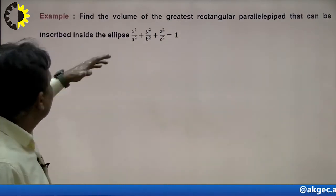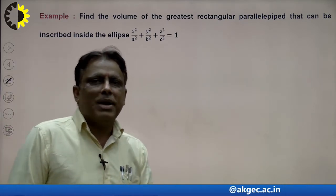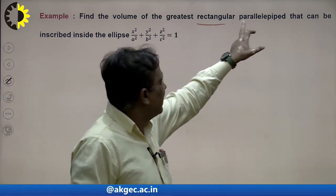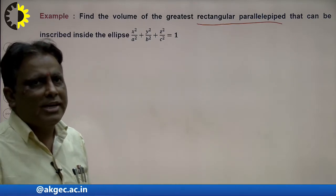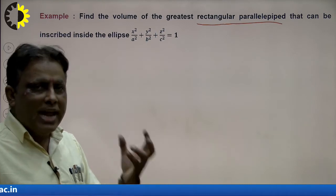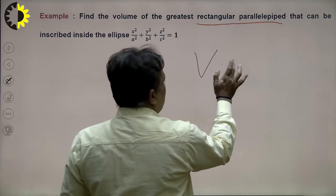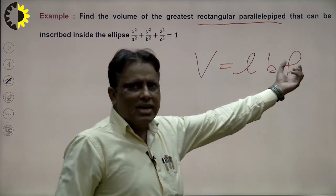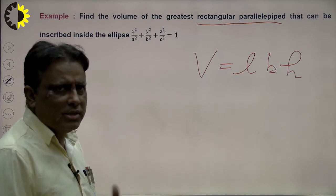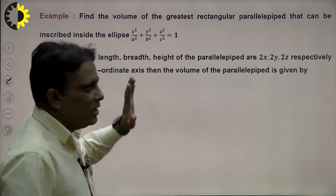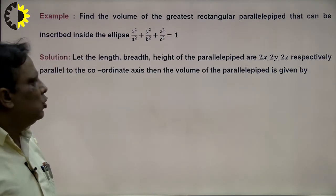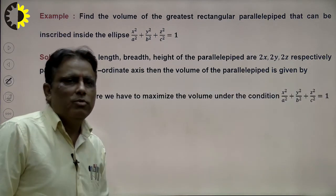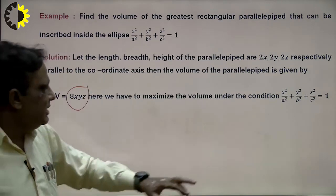Our first problem: find the volume of the greatest rectangular parallelepiped that can be inscribed in the ellipsoid. The volume of the rectangular parallelepiped with length, breadth, height 2x, 2y, 2z respectively is V = L×B×H = 8xyz. This is the function to maximize, subject to the ellipsoid equation as the constraint.